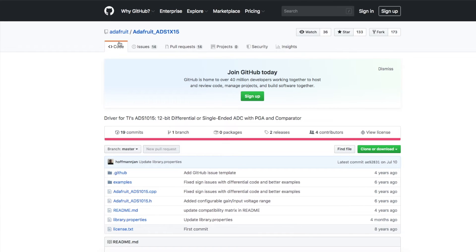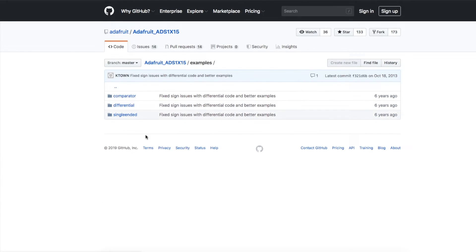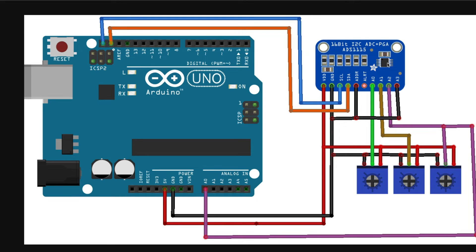Let's switch over to actually putting this to use on Arduino. I'm going to use an Adafruit library for this ADC — the library comes with a couple of examples. Here's my schematic. This module has I2C pull-up resistors on it, so I just connect serial clock and data to the Arduino, 5 volts and ground to the power supply on the module. I'm configuring the address of the module by grounding the address input, and that happens to be the default address that the Adafruit library uses.